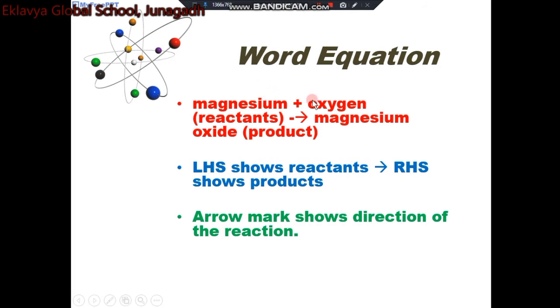Magnesium plus oxygen gives magnesium oxide. This is a word equation. It means the equation represented using words. LHS shows reactant and RHS shows product. Arrow mark shows direction of the reaction.